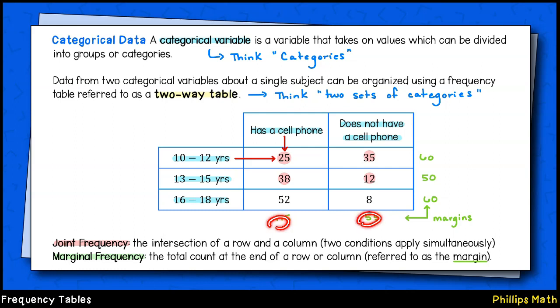Written in green along the bottom and right-hand sides are totals referred to as marginal frequencies. This is the total count for each column and each row. They are called marginals because the end of the row or column is referred to as a margin.